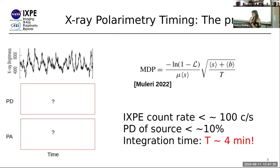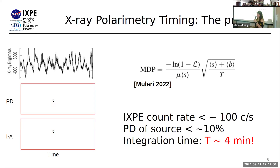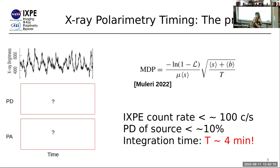To detect polarization QPOs, you might think to simply make a polarization light curve as we do for flux. Unfortunately, polarization is measured in a statistical sense, so we need a certain number of photons per time bin to accurately measure polarization properties. The minimum detectable polarization equation tells us that for typical X-ray binary values — a count rate of about 110 per second and 10% polarization (which is actually quite high) — we need about four minutes per measurement. That's far longer than the timescales we're interested in, so we can't build up these light curves and need a different approach.